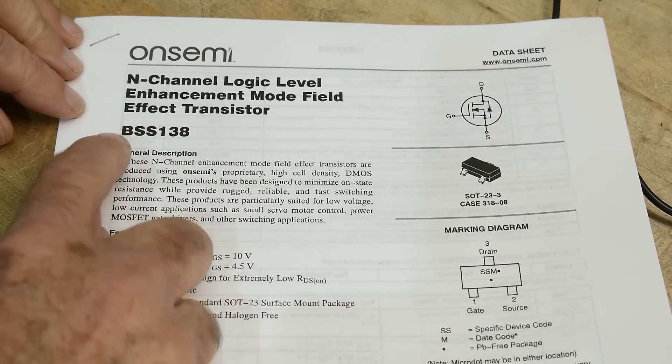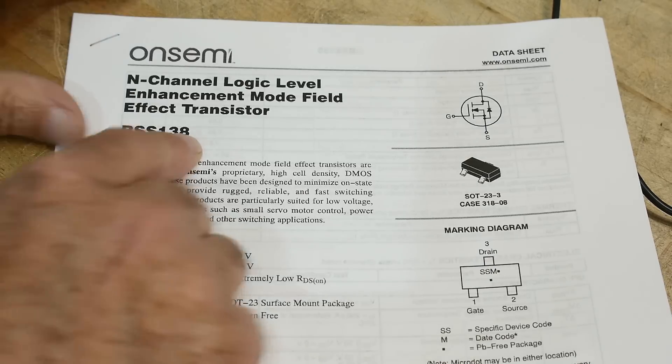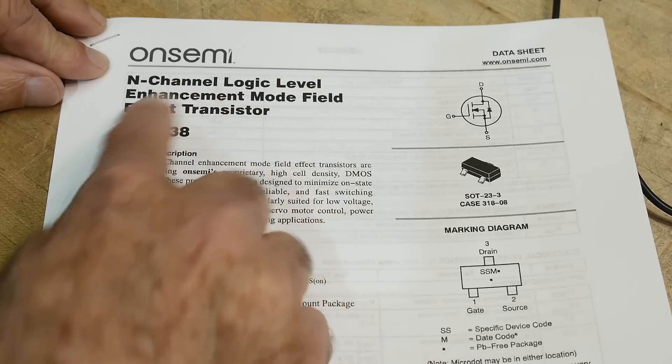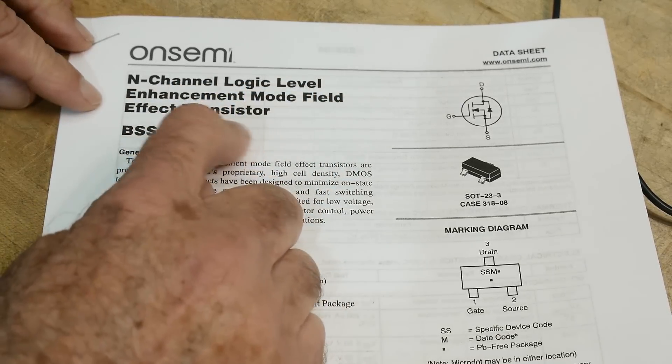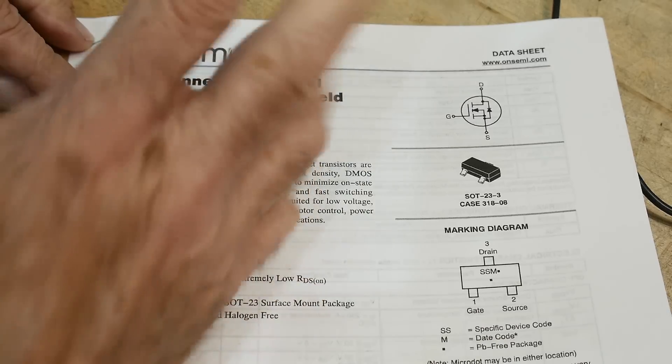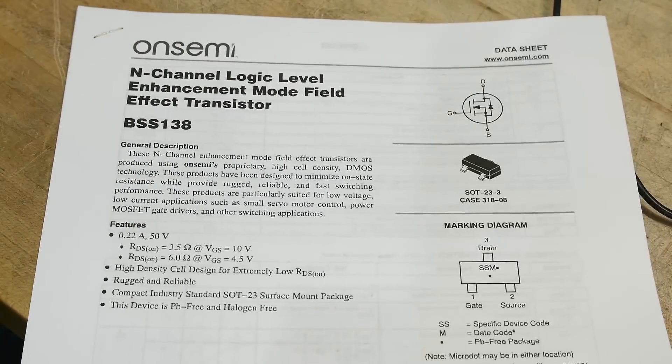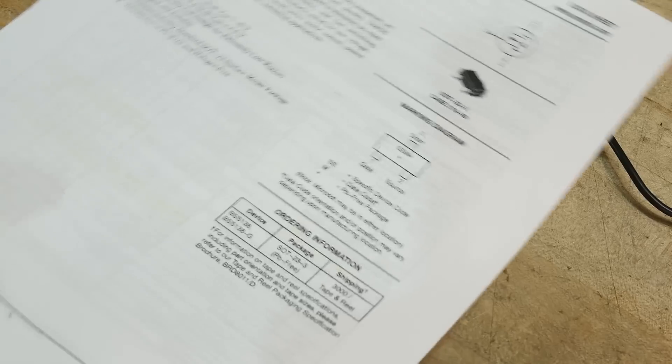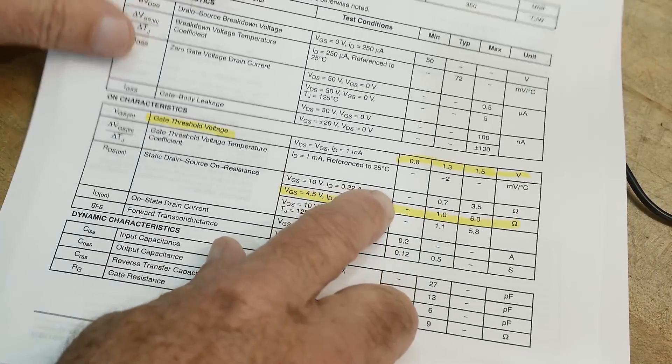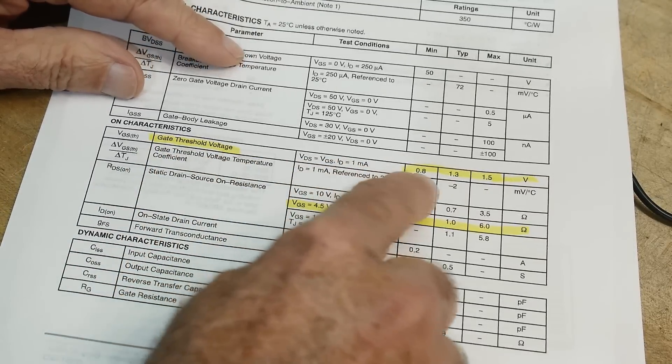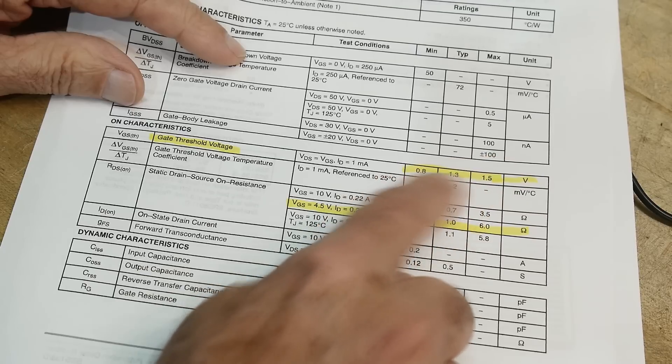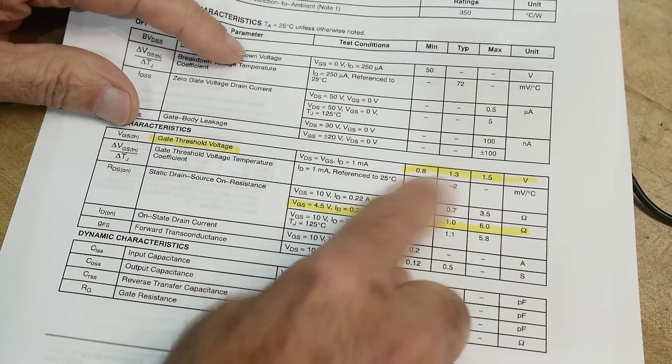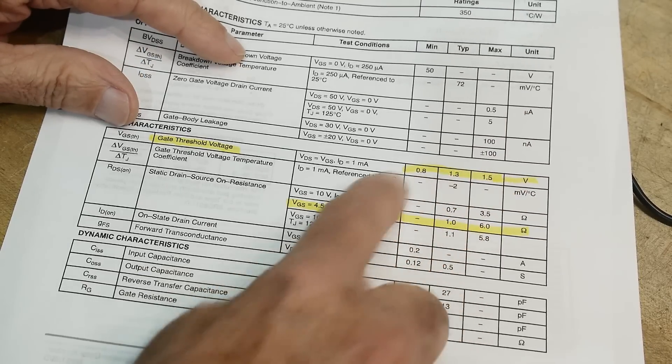Here's the device. It's called the BSS-138. And even in the description here, it says logic level. What does that mean? An N-channel logic level FET. It seems kind of strange, logic level. But if we read the data sheet and go to the thing that we're interested in, this gate threshold voltage. Even in the worst case, it's one and a half volts. So this thing is a superstar for turn-on characteristics. Only one and a half volts will start to turn this thing on.